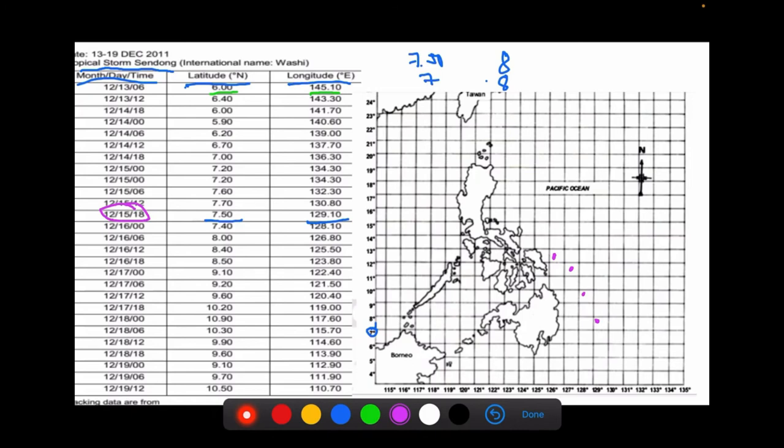So, don't rush so that you can really learn how to track a typhoon and where it will pass. Will it pass through Luzon, Visayas, or Mindanao. And then, after that, you have the following questions here. Where did Sendong form? So, when we say where, it means what place. So, you need to give a specific latitude and longitude. Okay? Where did it form? When did Sendong enter the PAR? When? So, it means when, I need a month, day, and time.